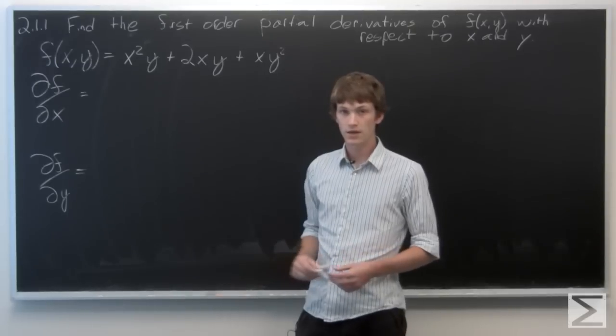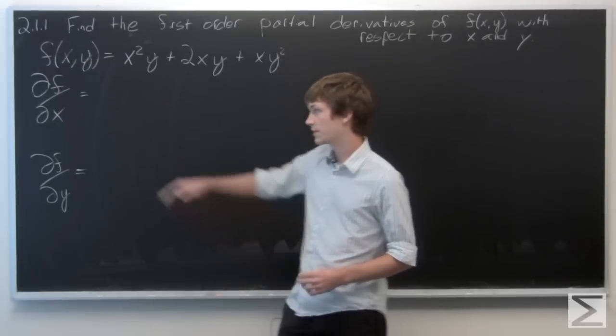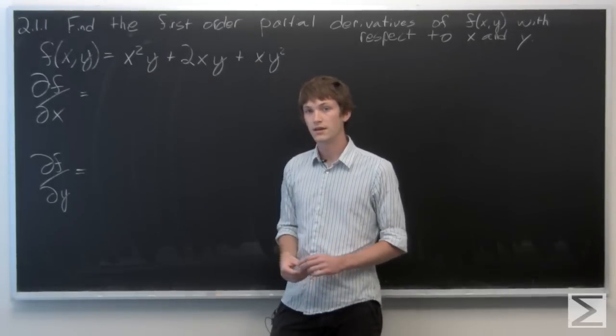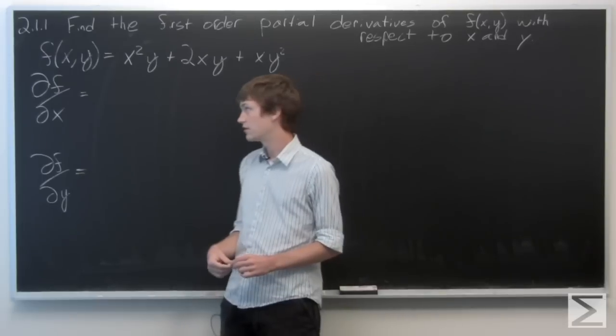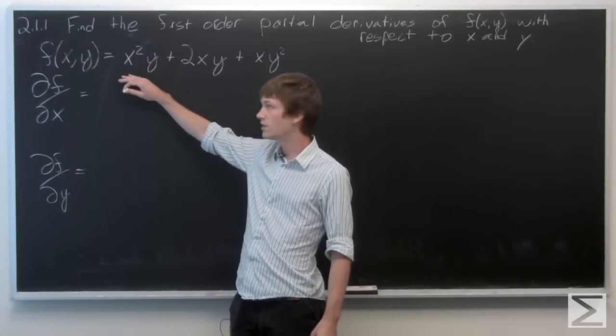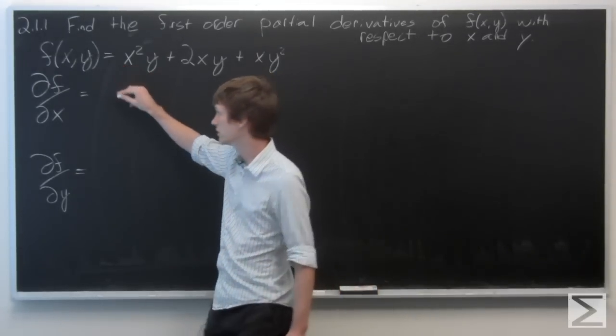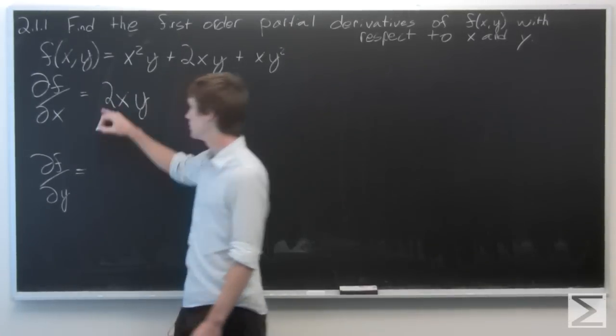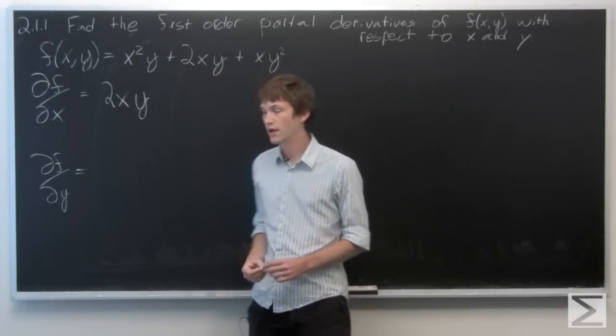So when we're calculating the partial derivative with respect to x, we're going to treat the y's as if they're constants and then take the derivative in the normal way. So this first term is just the derivative of x², which is 2x, and then we leave the y there.